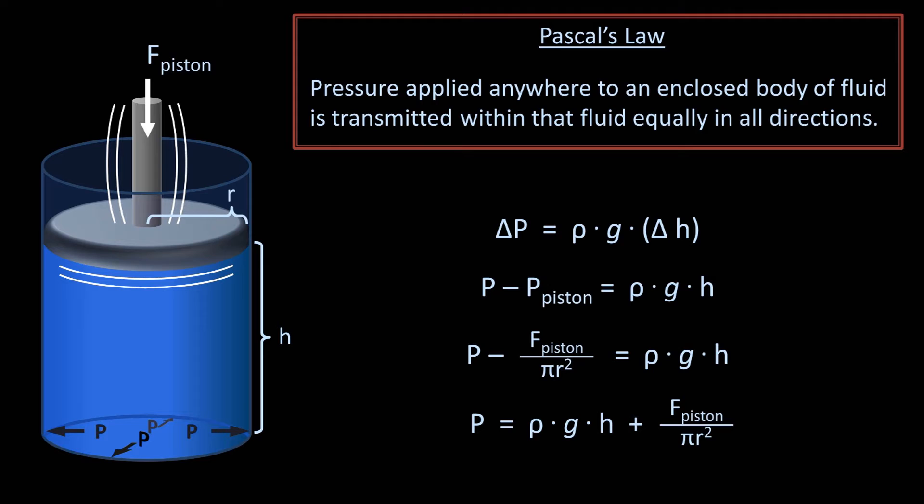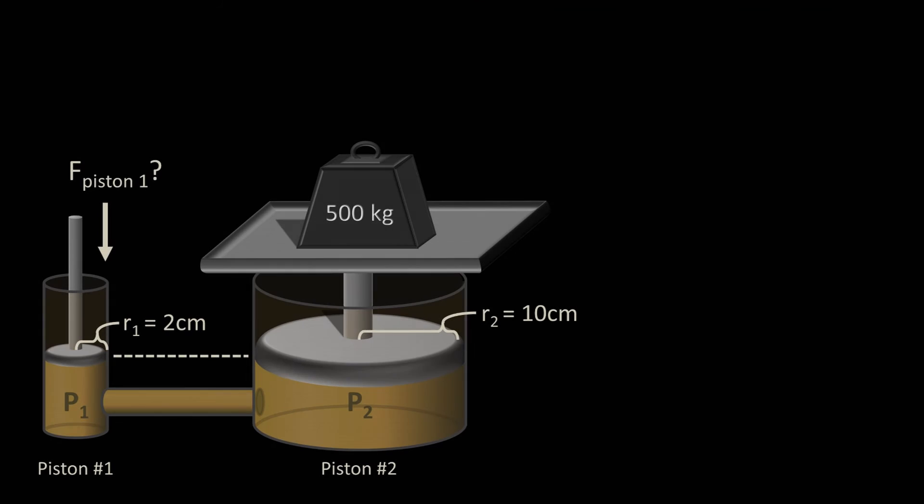But let's apply this general concept of a piston imparting a force on a non-compressible liquid in a somewhat more complex situation. Imagine we have a system of two pistons of markedly different sizes attached by a liquid-filled tube. There is some force pushing down on piston 1, which has a radius of 2 cm, and resting on piston 2, which has a radius of 10 cm, is a 500 kg weight.